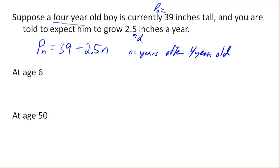So then we can make predictions. At age six, for example, this would be how many years after four-years-old? This would be two years later, right? And so we could figure out P sub 2.